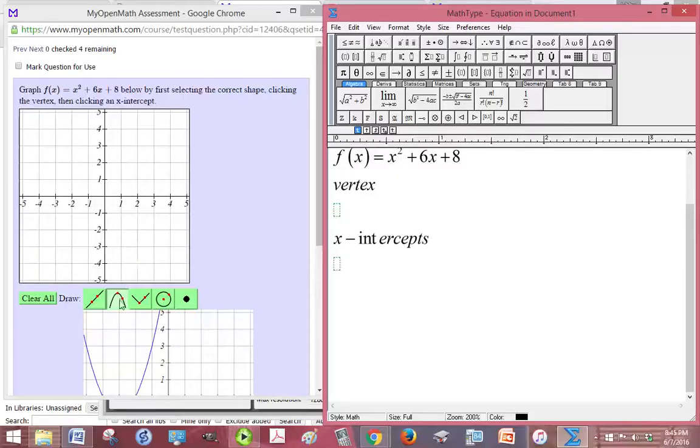So the correct shape would be this parabola right here, and the first thing we're going to do is plot the vertex, but we need to find the vertex. So recall that your vertex is going to be negative b over 2a, and the function value at whatever negative b over 2a is.